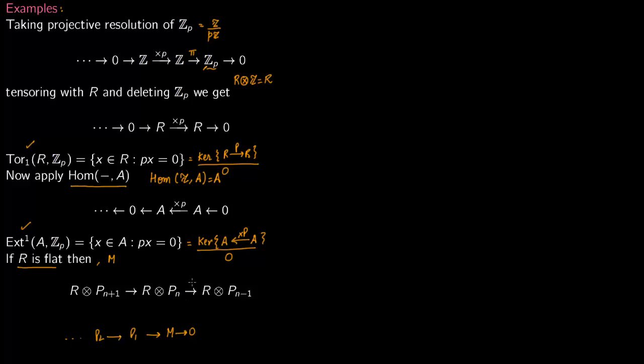So that means kernel is always equal to image. So kernel here is equal to image. So say this is map D_n and this is map D_(n+1), so kernel of D_n over image of D_(n+1), this is 0.